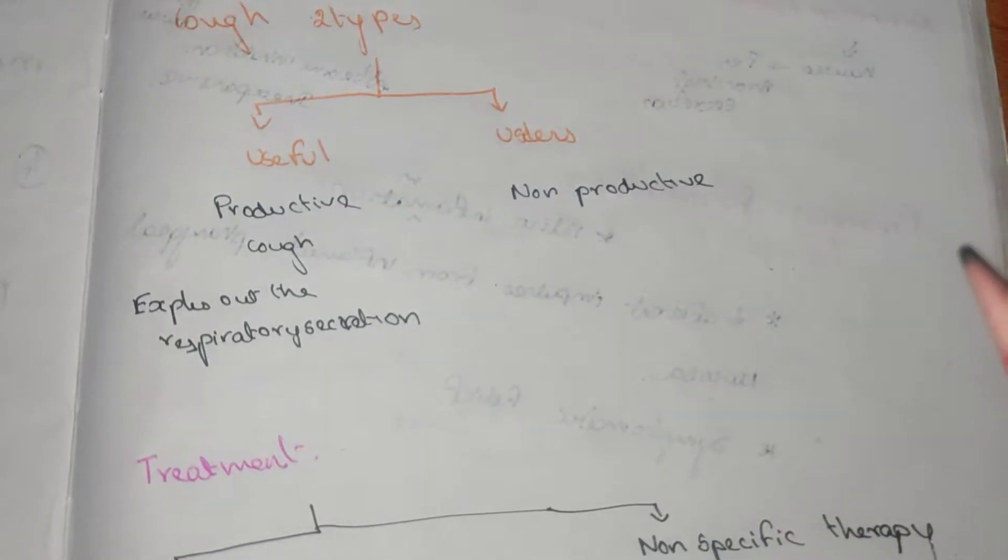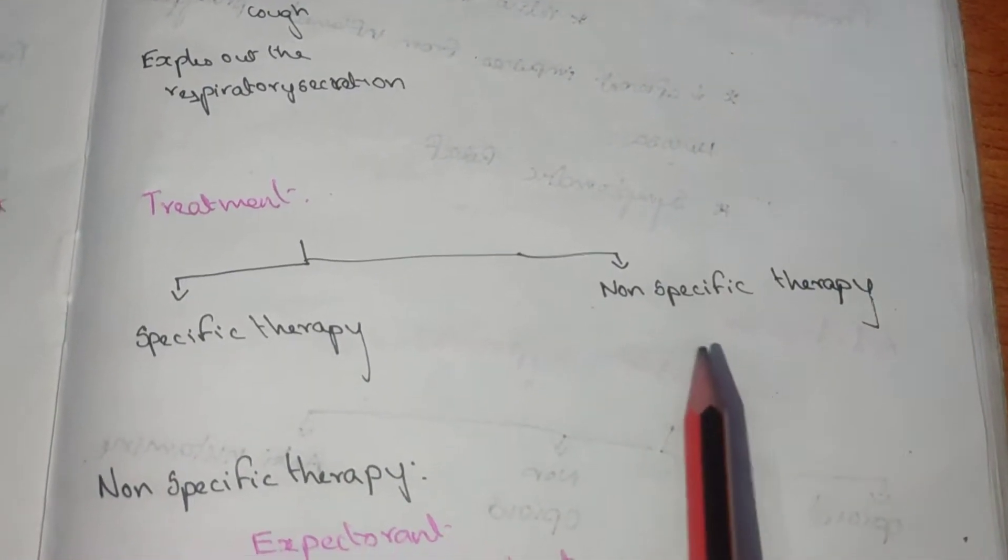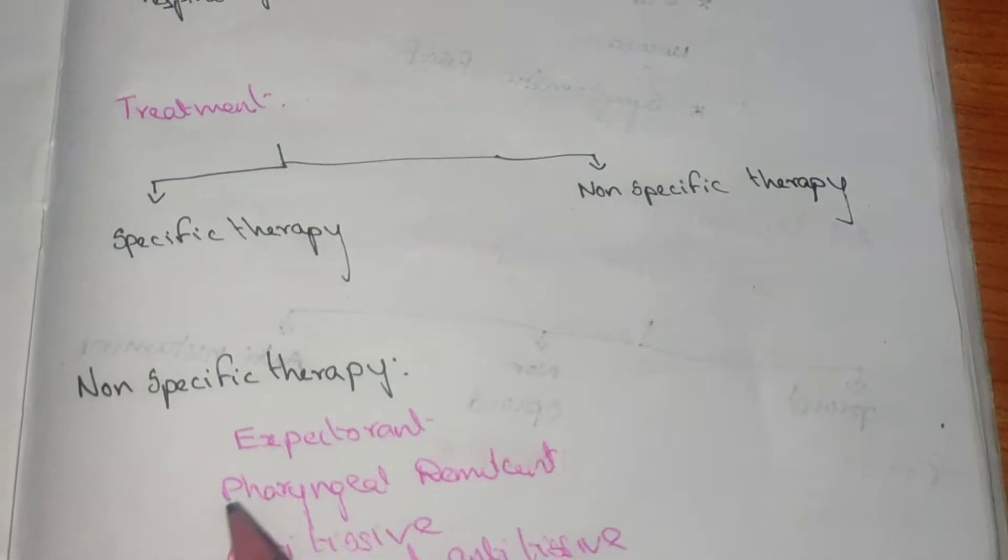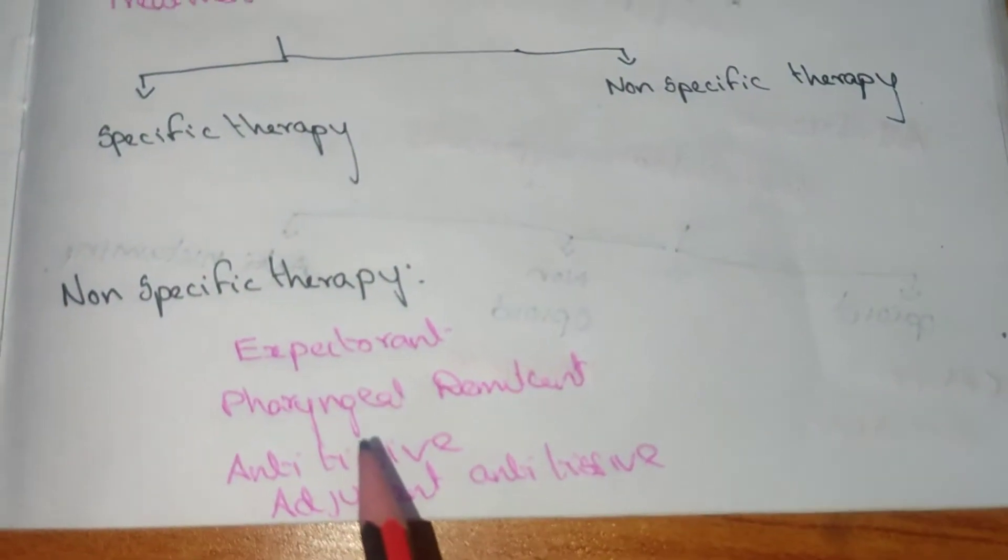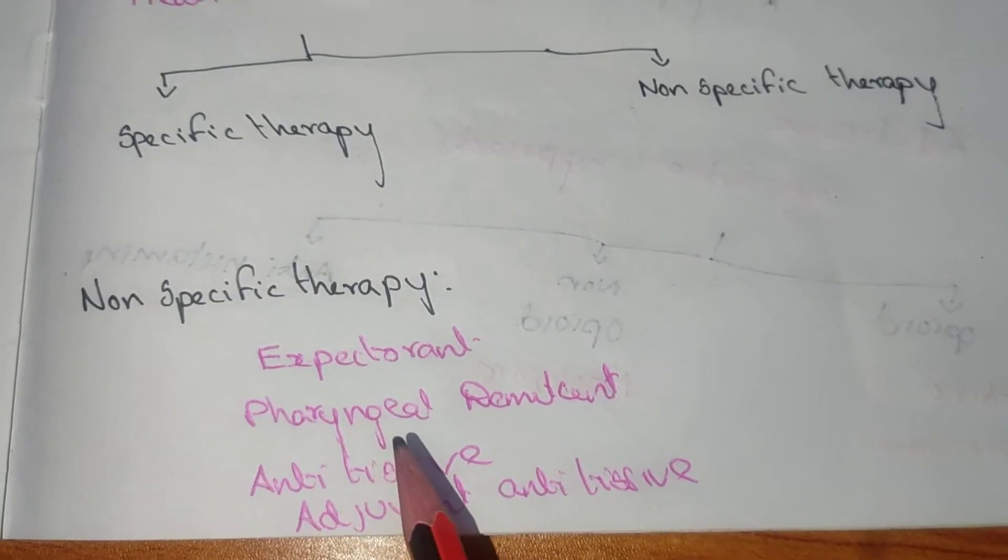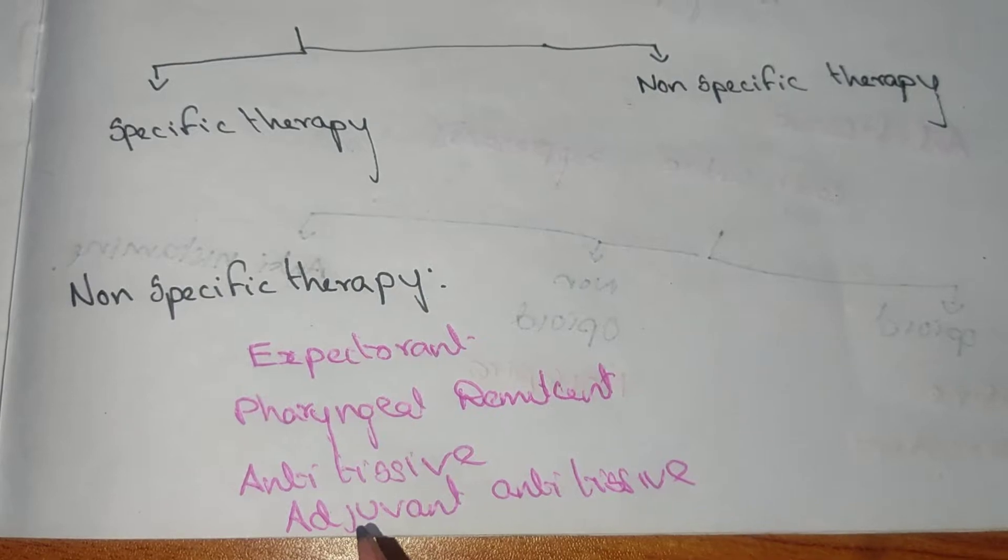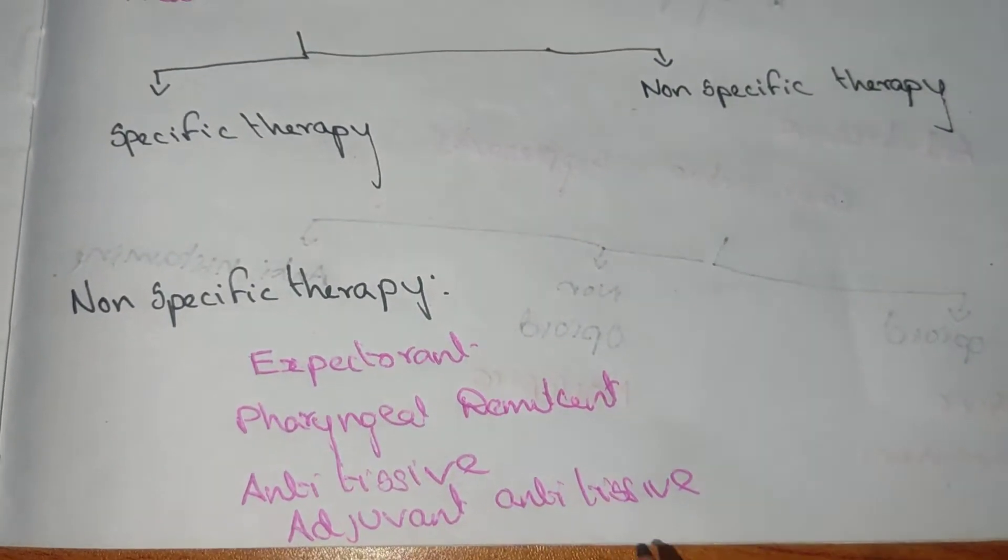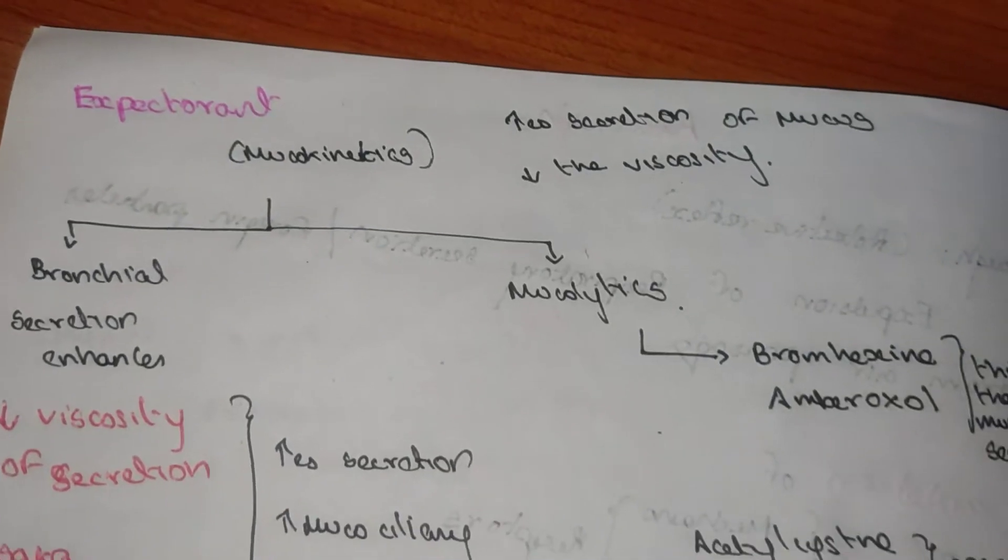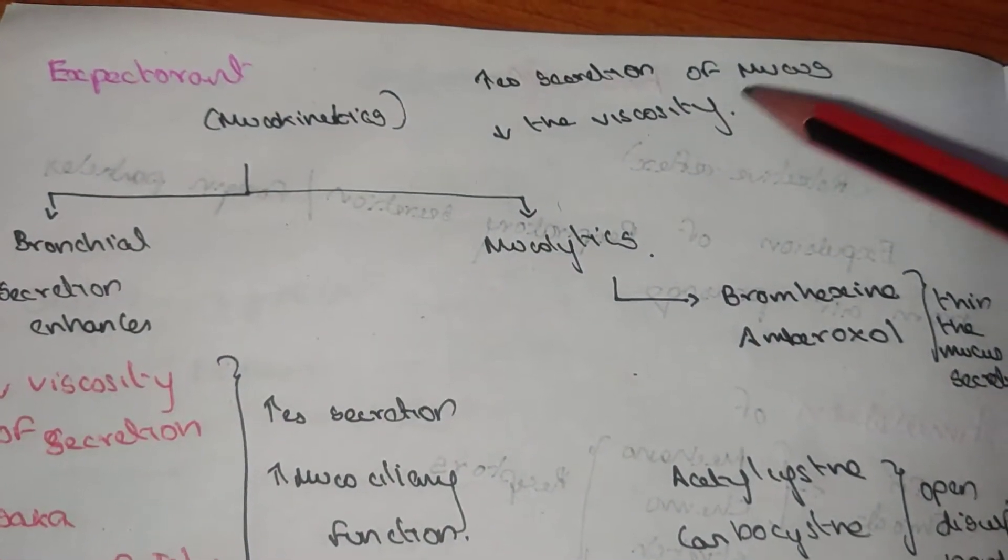In treatment, there is specific treatment as well as non-specific treatment. In the non-specific treatment, these are used: expectorants, pharyngeal demulcents, anti-tussives, and adjuvant anti-tussives. The expectorants are mucokinetics. There is increased secretion of mucus and decreased viscosity.